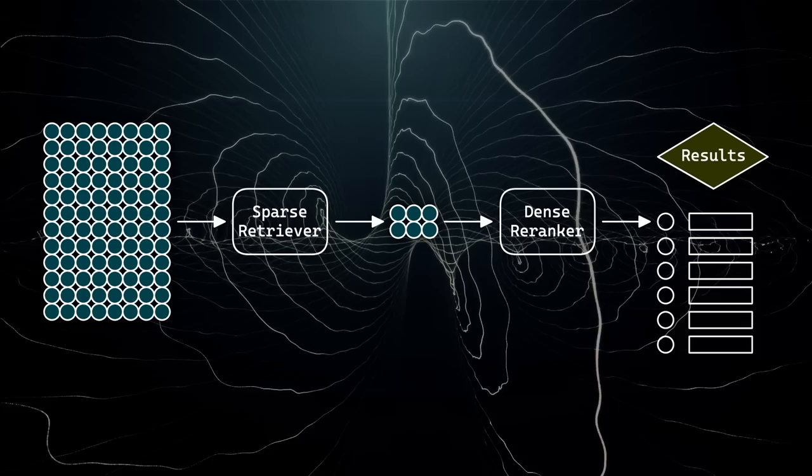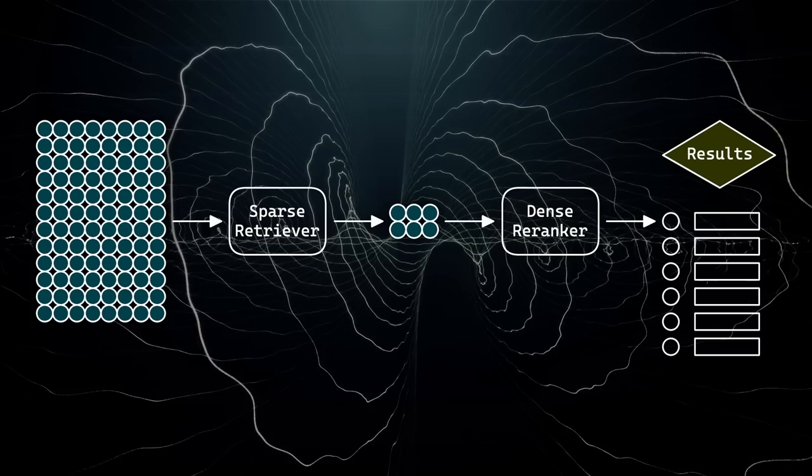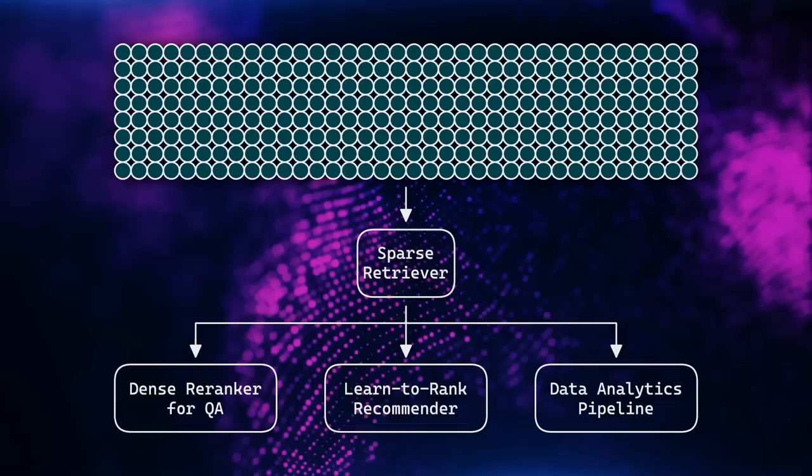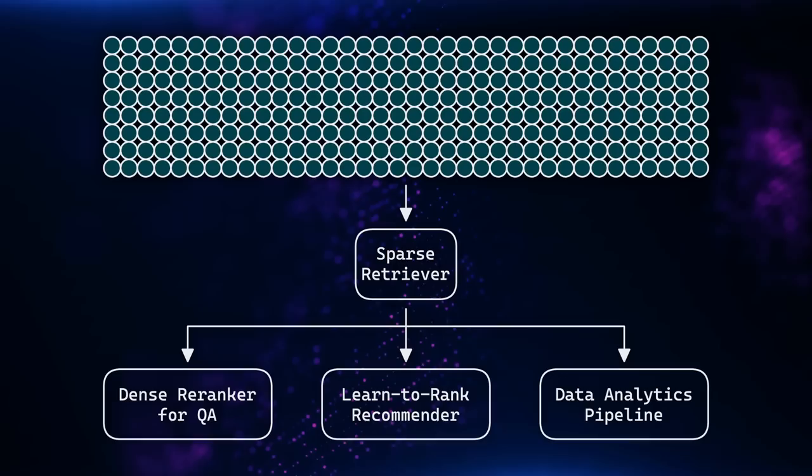Those candidate documents are then passed to a second re-ranking stage, which uses a dense embedding model to re-rank from that smaller set — using its more human-like semantic comprehension. One benefit is that we can apply the sparse method to the full document set for efficiency, then re-rank with the dense model. Another benefit is that the re-ranking stage is detached from the retrieval system, so we can modify one stage without affecting the other.